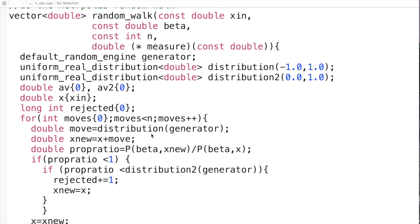So we first make a trial move. We define a function x nu and we define the probability ratio, which is p for x nu divided by p for x.